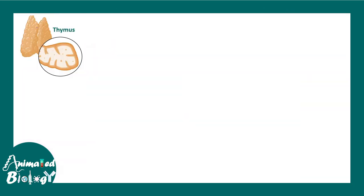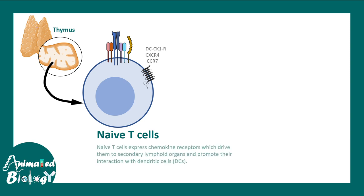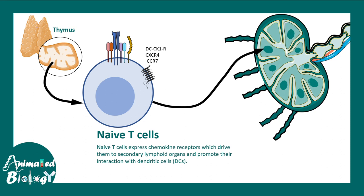Now let us try to put things in context and see how chemokine signaling is important for T cells. After its stringent training in the thymus, T cells become naive. The naive T cells leave to the lymph node, and they have chemokine receptors like CXCR4, CCR7, and others. All these chemokine receptors and corresponding signals allow them to be translocated into the nearby lymph node where they can interact with antigen-presenting cells like dendritic cells.